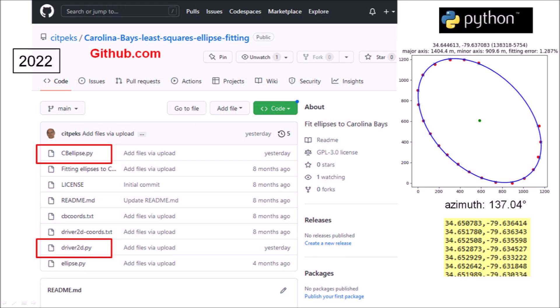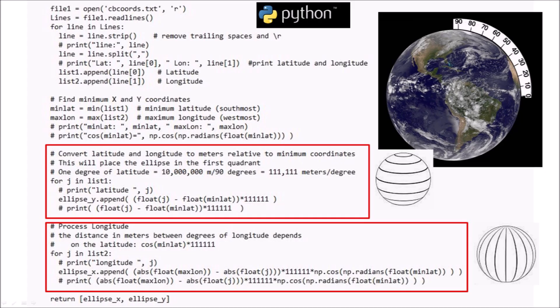In 2022, I coded a Python program to fit ellipses to the Carolina Bays by the least squares method. Points are selected along the perimeter of a Carolina Bay, and the coordinates of the perimeter are processed by the program to graph an ellipse and calculate the azimuth of the bay. This program is open-source software available for everyone. The Python program can process points from Google Earth geographical coordinates or from a digitized image. Geographical coordinates are converted to meters, taking into consideration that the distance between degrees of longitude changes depending on the latitude.